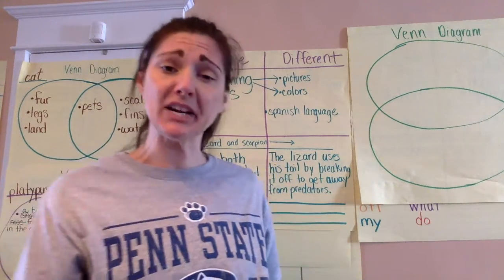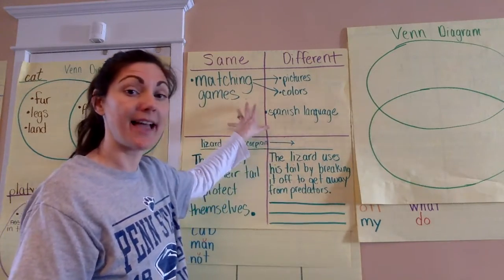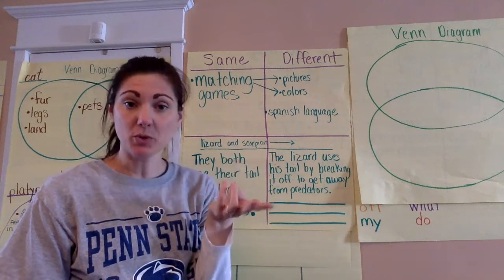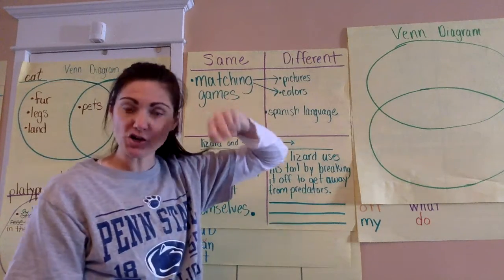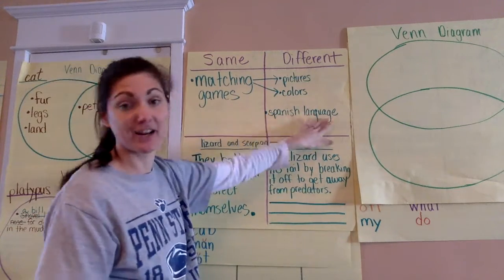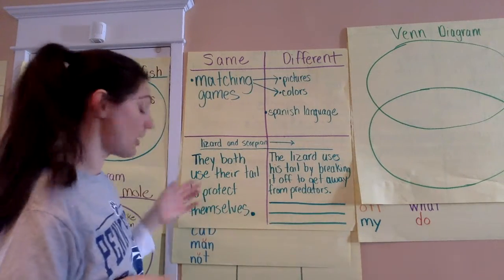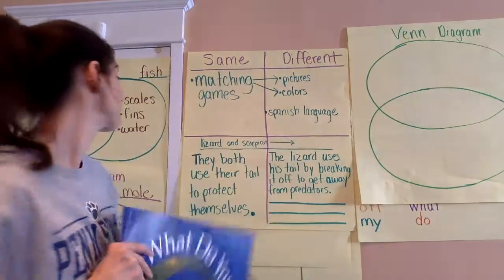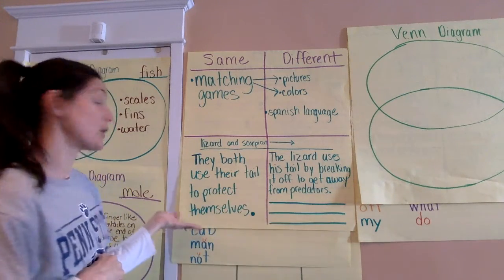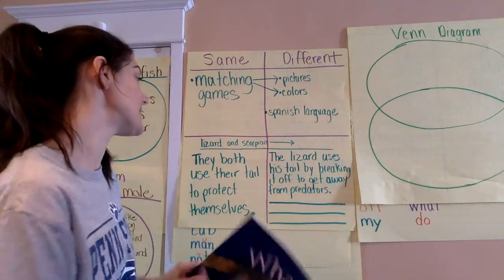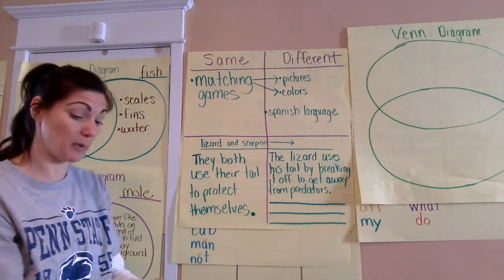That optional assignment was taking two games and comparing and contrasting them using a T-chart. Then the second day I did a lesson comparing two of Dylan's games — he has two matching games. One was the Dr. Seuss game that matched pictures, the other was a paintbrush game that matched colors. The paintbrush one also had Spanish on it whereas the Dr. Seuss one was only in English. Then we read more pages from the book and compared the lizard and the scorpion using a T-chart. We said they both use their tail to protect themselves, but the lizard uses his tail by breaking it off to get away from predators.